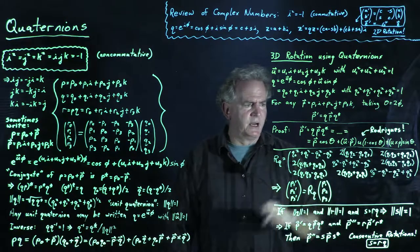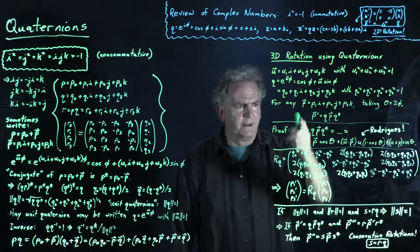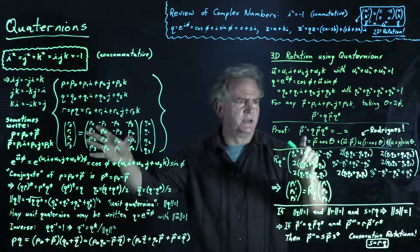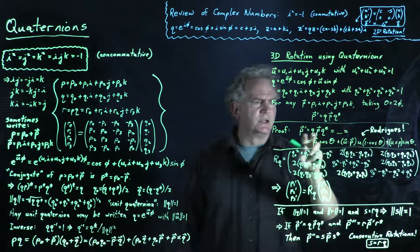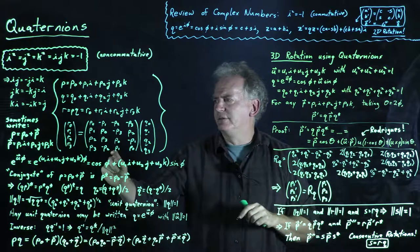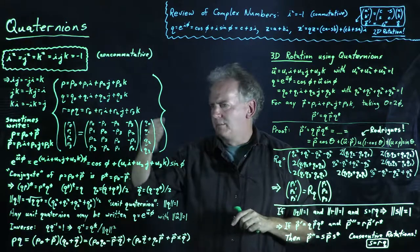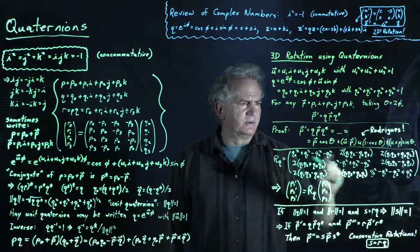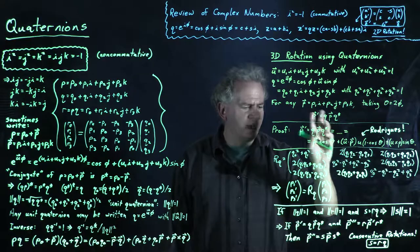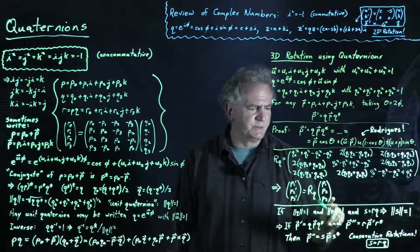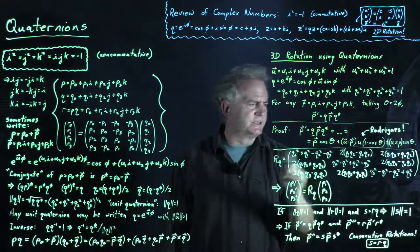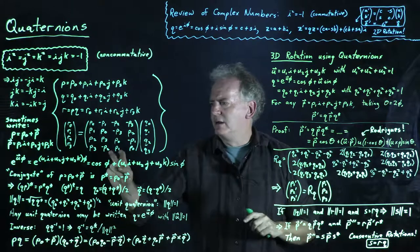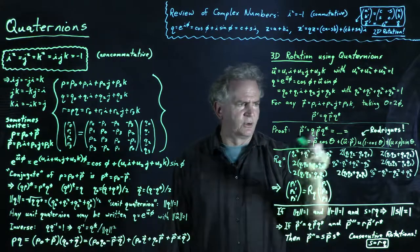It can also be shown that p⃗' from the product q·p⃗·q* can be written simply as p⃗' = R·p in vector form, where R is a specific rotation matrix. Pause the video again, take the product of those three quaternions, apply the relationship, and you should get that matrix as the result corresponding to that product.